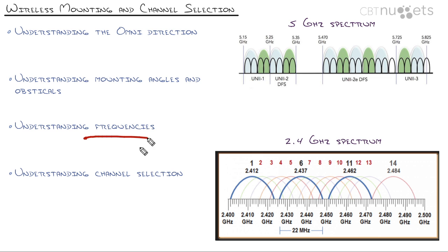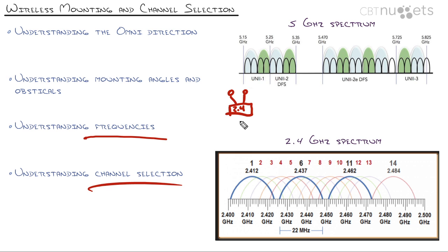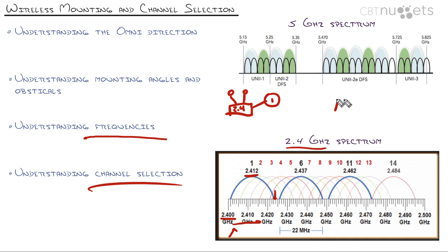Now we come to the most important thing of this entire video: wireless frequencies and channel selection. Your wireless access point can either be a 2.4 GHz device or a 5 GHz device, and some support both. Within that spectrum, you need to select a channel — think of these like lanes of a freeway. If you choose channel 1, your access point is using 2.400 GHz through about 2.412 GHz, and all clients that join automatically detect and join channel 1.